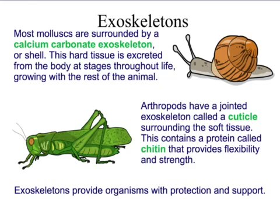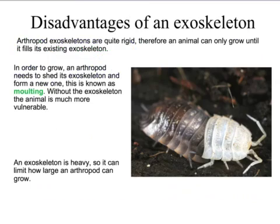Exoskeletons provide organisms with protection and support. The disadvantage is that arthropods are quite rigid, so the animal can only grow until it fills its existing exoskeleton. After that it has to molt, and at those stages it's not hard enough, making it vulnerable to predators. This is called ecdysis — the shedding of the skin. The exoskeleton is also heavy, which can limit how large the arthropod can grow, and that's why insects are generally very small.